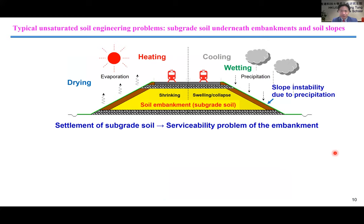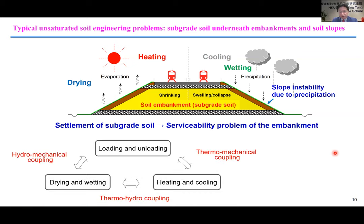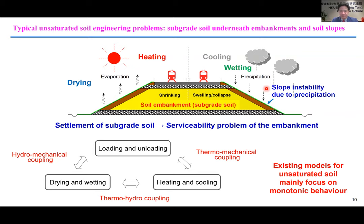Now let me move to the research background for today's lecture. This figure shows typical unsaturated soil engineering problems, such as subgrade soil underneath embankments and soil slopes. The soil underneath the embankment is subject to heating and cooling cycles, as well as drying and wetting cycles throughout the year. Embankment slopes may also suffer instability due to precipitation. Most existing models focus on monotonic behavior only, so a state-dependent cyclic thermo-hydromechanical THM model is needed.